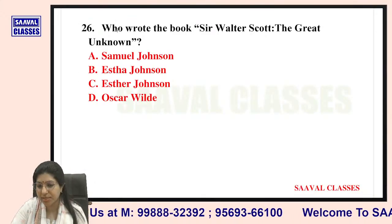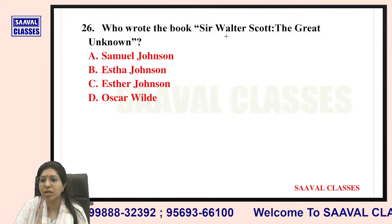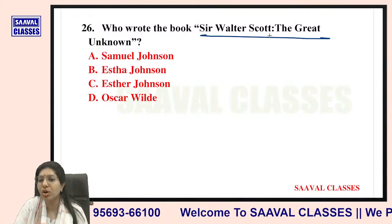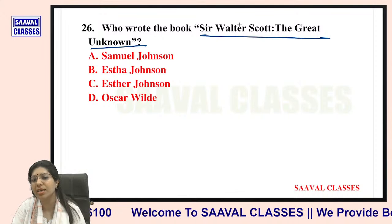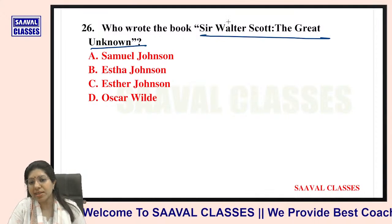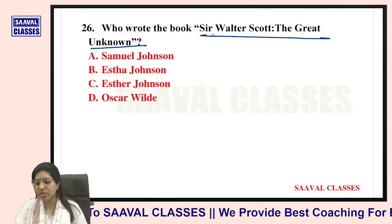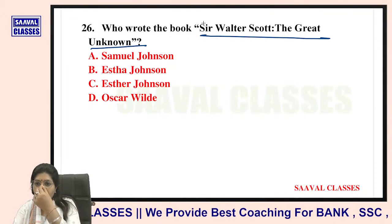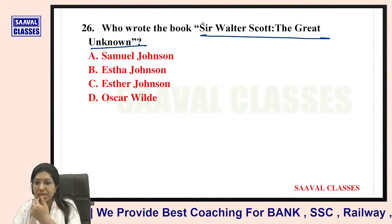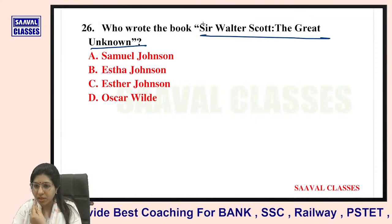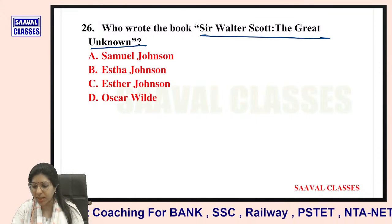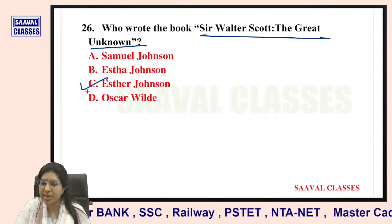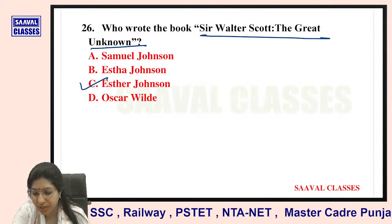Question number twenty-six: Who wrote the book Sir Walter Scott: The Great Unknown? Options are Samuel Johnson, Esther Johnson, or Oscar Wilde. The writer is Esther Johnson — absolutely right.